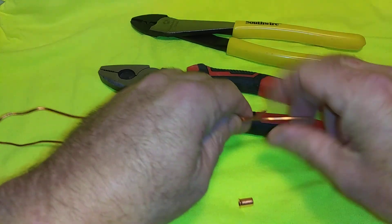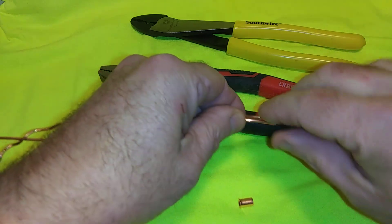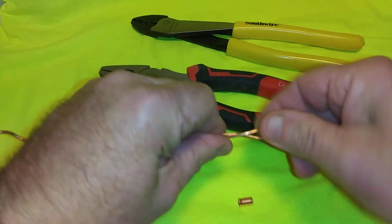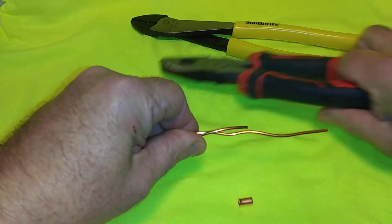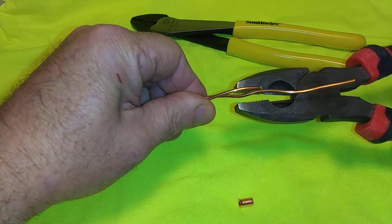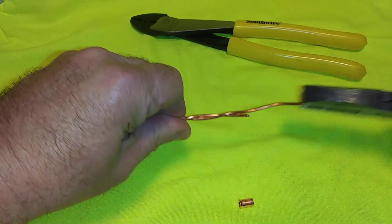You simply take them, leave one longer than the other to go to the outlet on the green screw, take your lineman pliers, and twist them together.